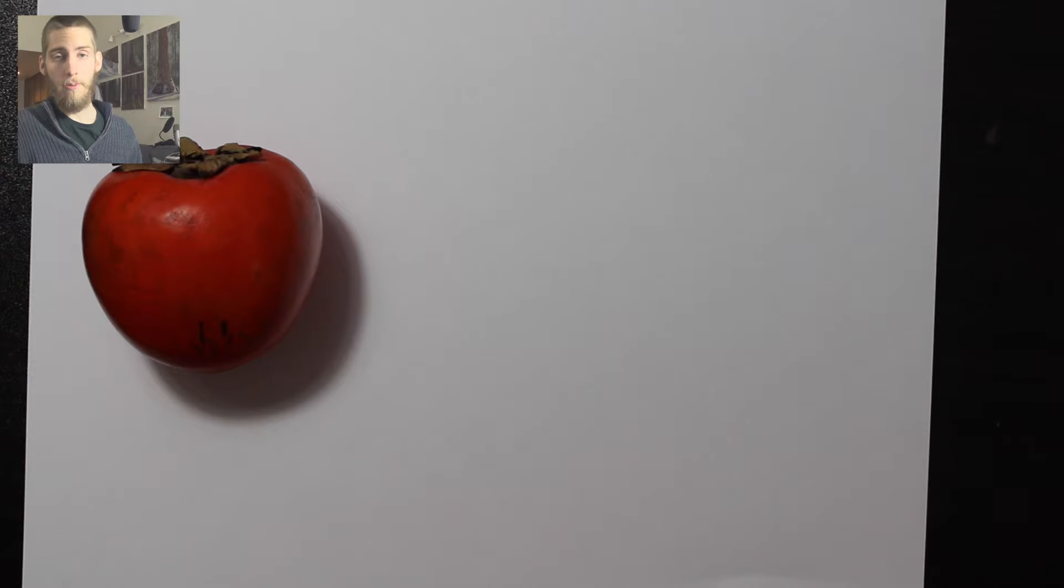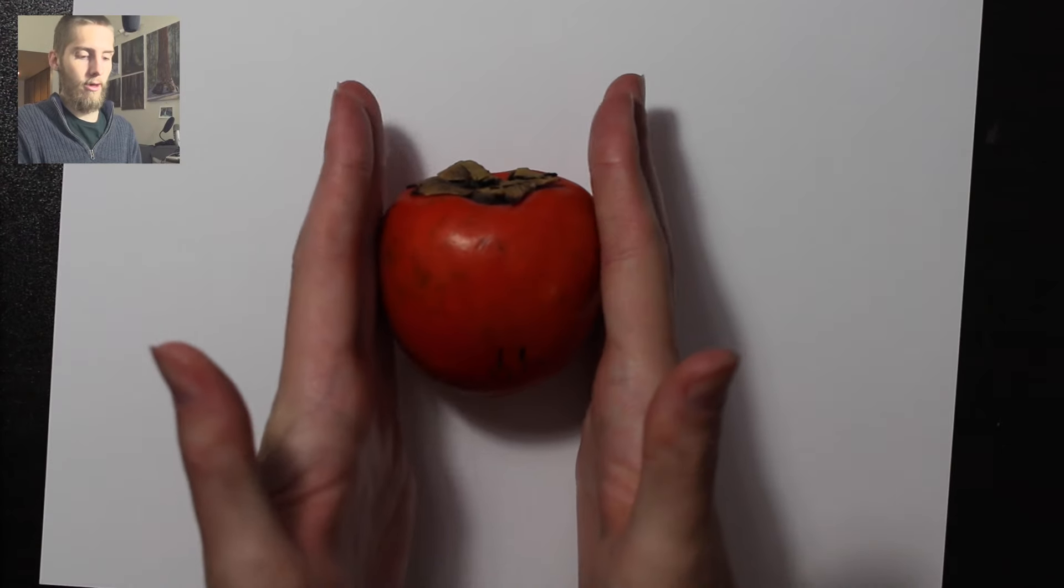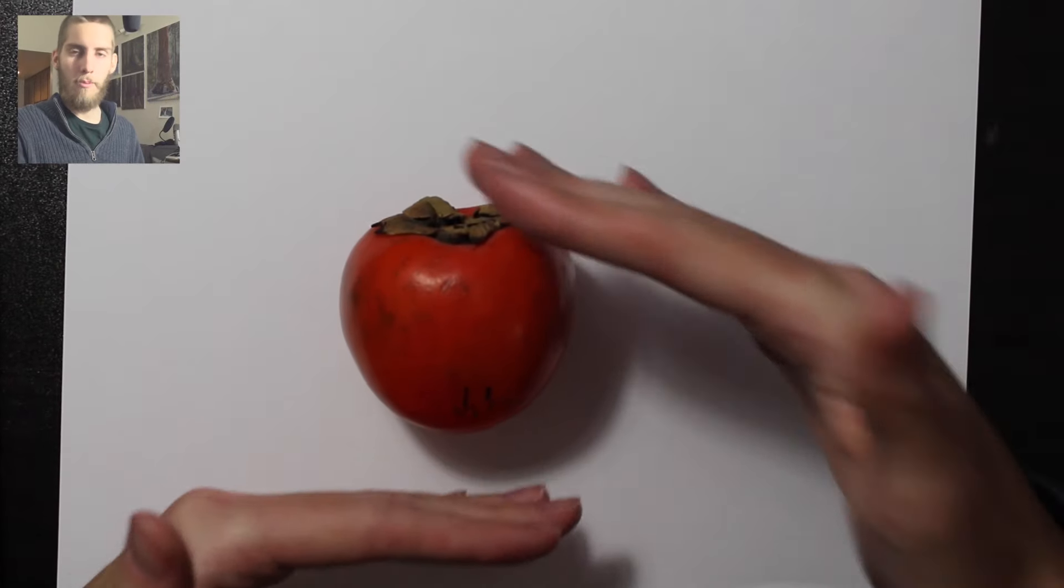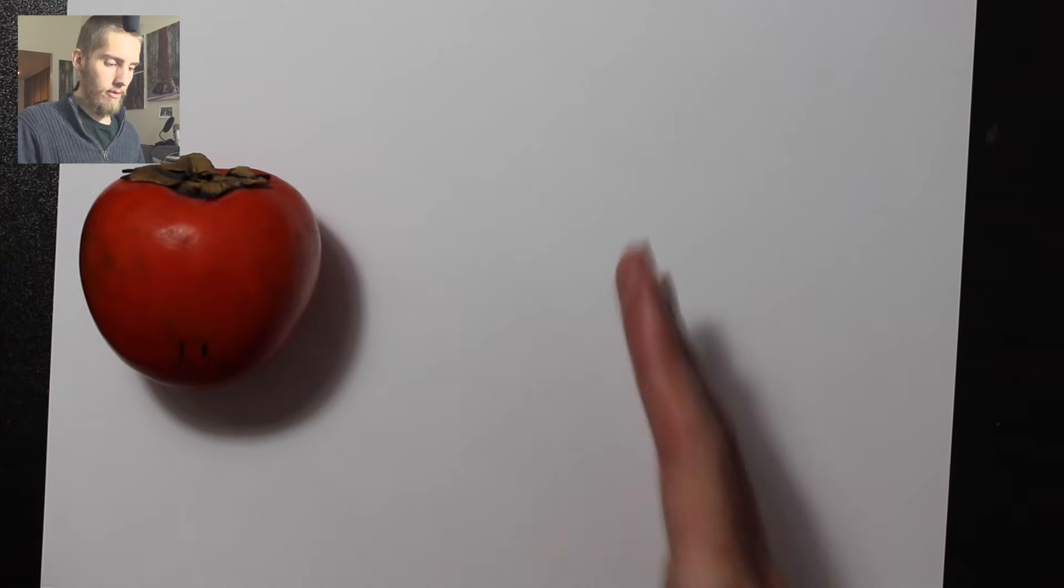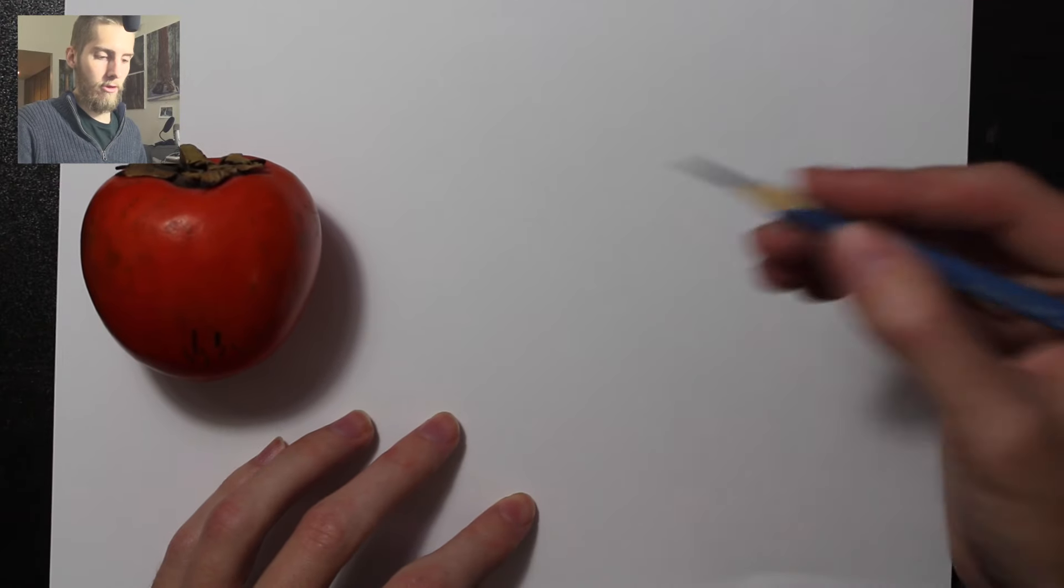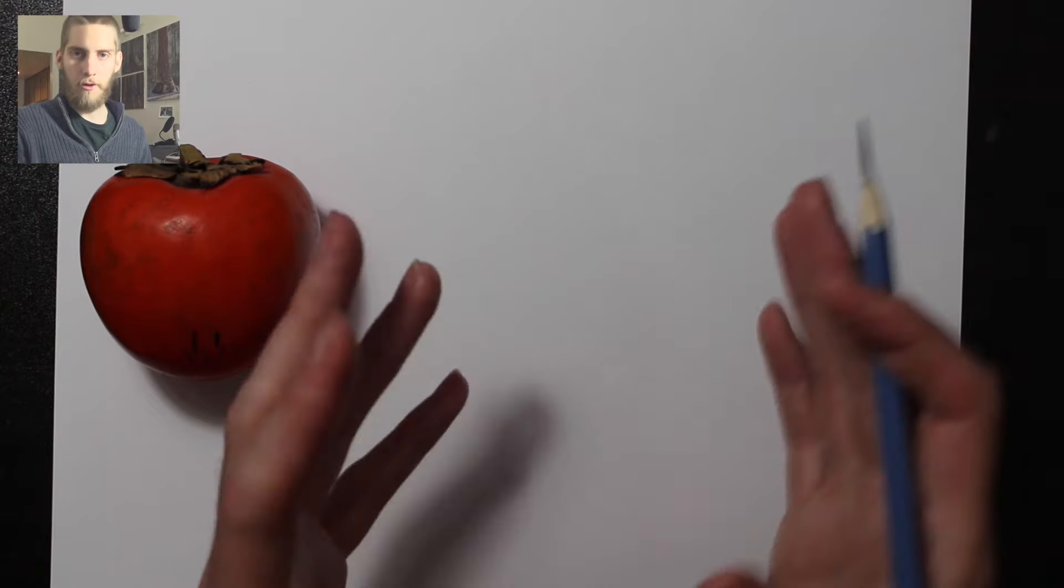What I do is I pick two opposing sides. I either pick the width of the object or the height. Top and bottom or left and right. In this case I'm going to pick the width. I'm going to know what's going to fit on my page.